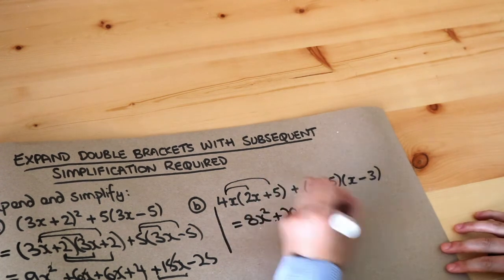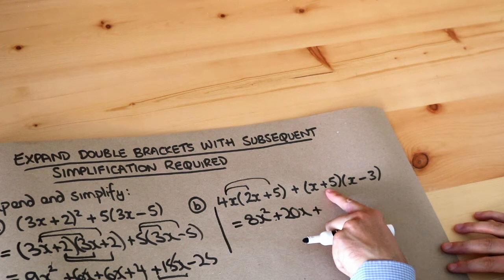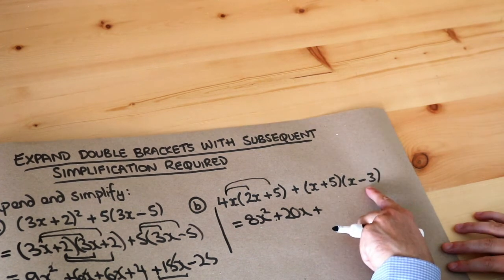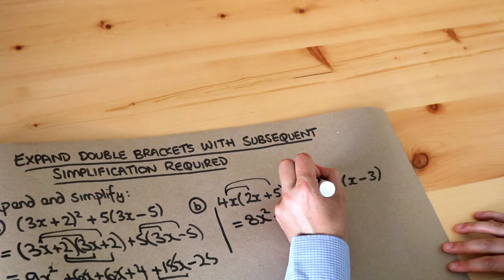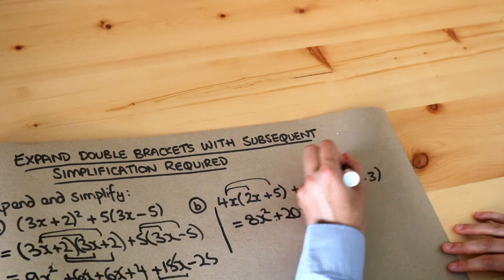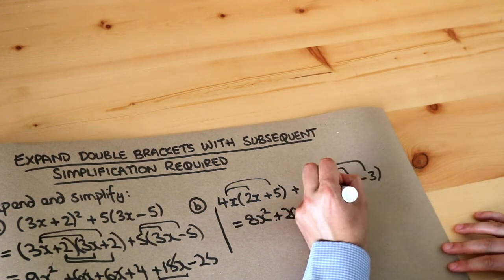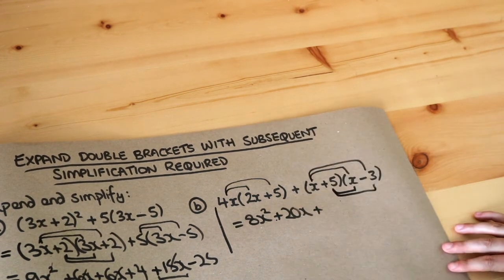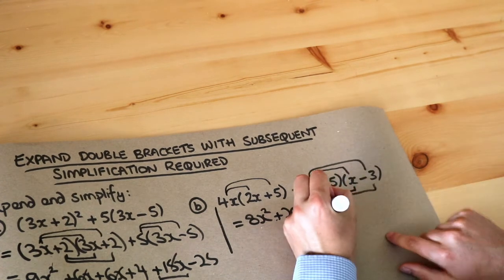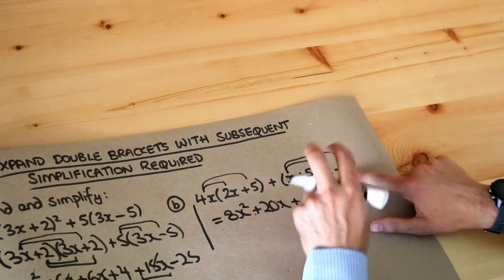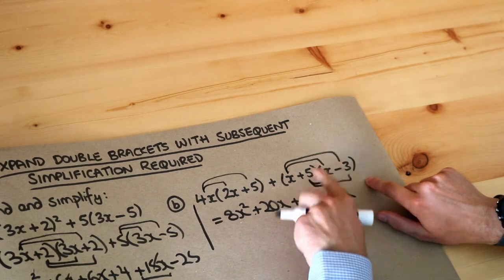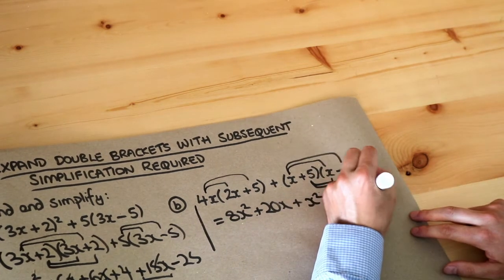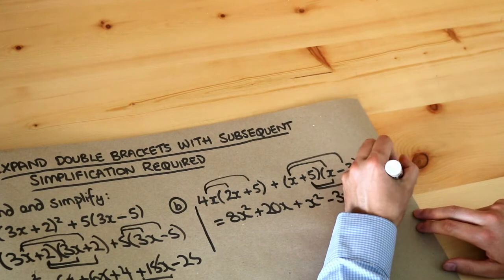And then we've also got to expand out these two brackets. So we do each thing in the first bracket multiplied by each thing in the second bracket. So the x here gets multiplied by each thing in the second bracket and the 5 here gets multiplied by each thing in the second bracket. x times x is x squared. x times minus 3 is minus 3x. 5 times x is 5x. 5 times minus 3 is minus 15.